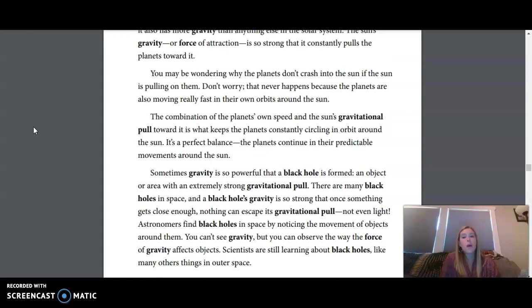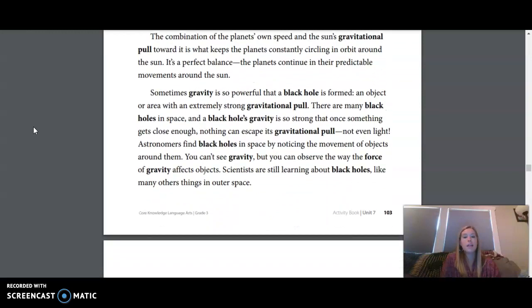You may be wondering why the planets don't crash into the Sun if the Sun is pulling them. Don't worry, that never happens, because the planets are also moving really fast in their own orbits around the Sun. The combination of the planets' own speed and the Sun's gravitational pull toward it is what keeps the planets constantly circling in orbit around the Sun. It's a perfect balance. The planets continue in their predictable movement around the Sun.